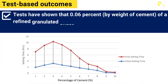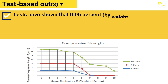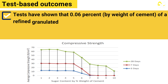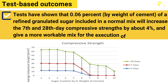Test-based outcomes. Tests have shown that 0.06% of a refined granulated sugar included in a normal mix will increase the setting time by approximately 1-2 hours. Tests have also shown that this percentage will increase the 7th and 28th day compressive strengths by about 4%, and give a more workable mix for the execution of work.